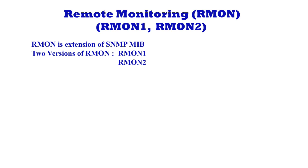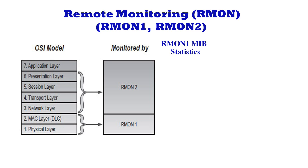There are a number of variations to the RMON MIB. For example, the token ring RMON provides objects specific to managing token ring networks. The SMON MIB extends RMON by providing RMON analysis for switched networks. For example, the RMON1 MIB group includes the following.